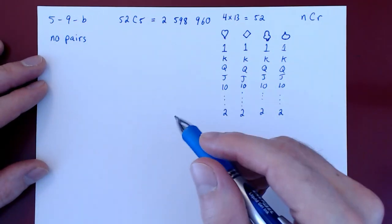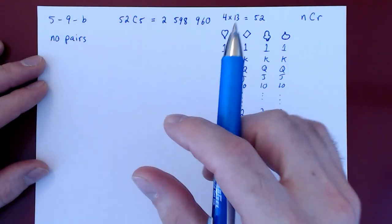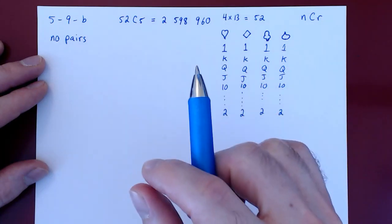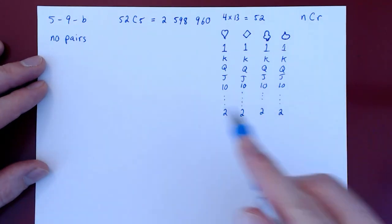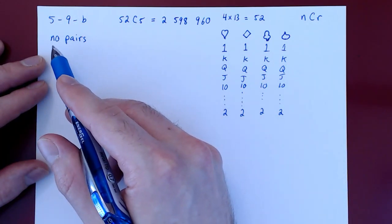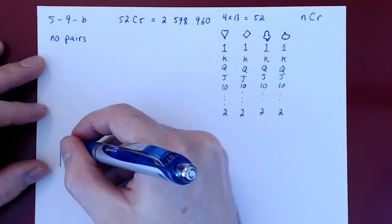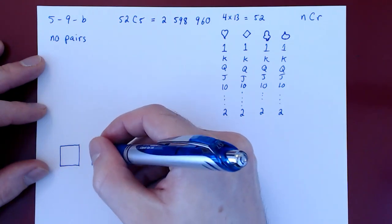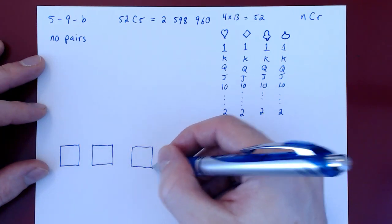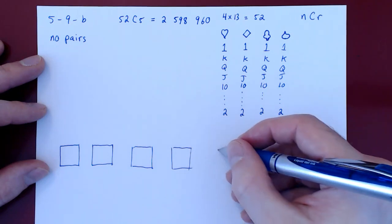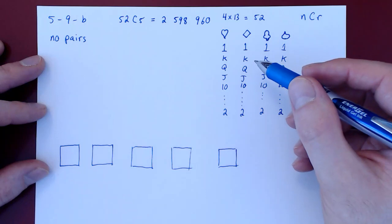As always, if you're not sure how to count those elements directly, you can write down a specific such hand and then use the specific example to build the general setup. So if we have no pairs, let me write down such a hand. We have the first card, the second card, third card, fourth and fifth.